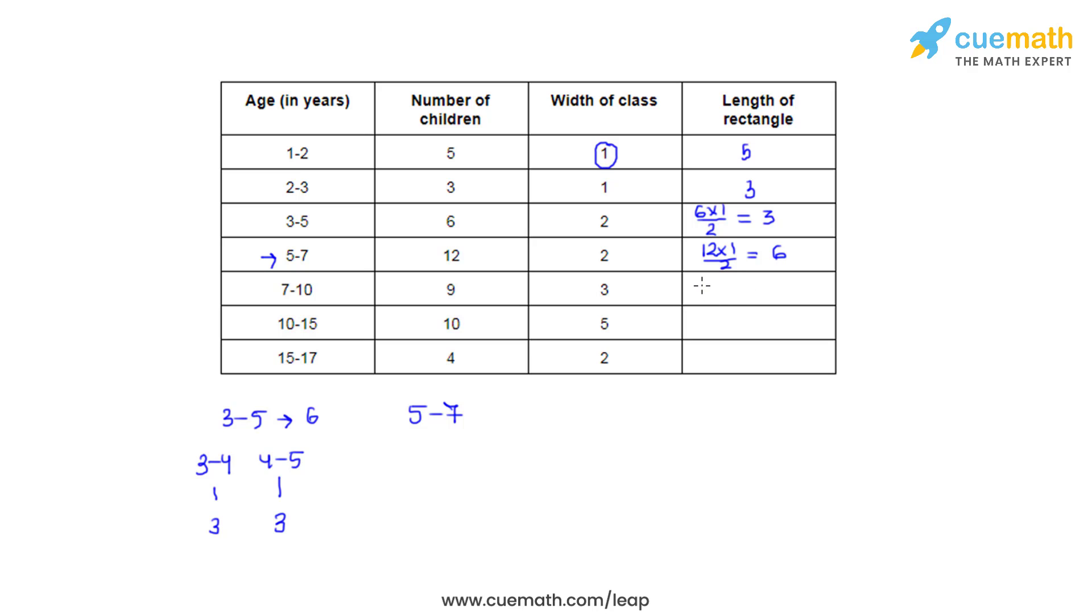Coming to the next one, we write it as 9 times 1 divided by 3, that gives us the adjusted frequency 3. The next one is 10 times 1 divided by 5, gives us the adjusted frequency to be 2. And finally, the last one we write it as 4 times 1 divided by 2, and we get the adjusted frequency as 2.